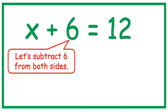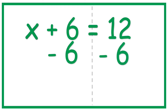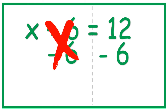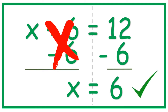Let's subtract 6 from both sides. Always remember that the equal sign separates the left side and the right side of the equation. So if we subtract 6 on the left side, we also should subtract 6 on the right side to make the equation balance. And that cancels 6, leaving x isolated. Then let's bring down the equal sign and the answer to 12 minus 6, which is 6. You got it.